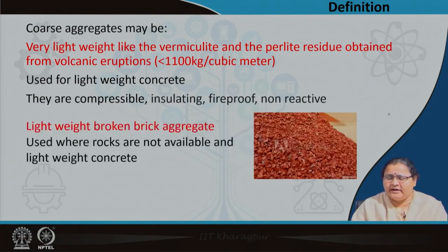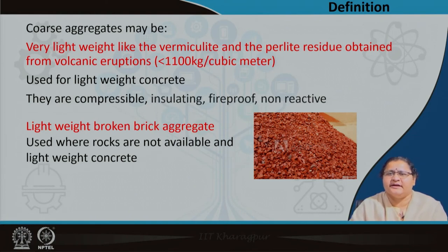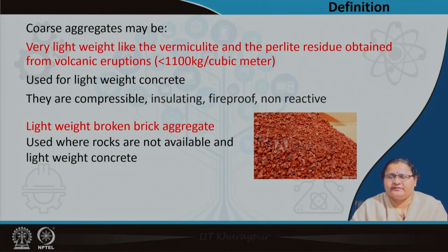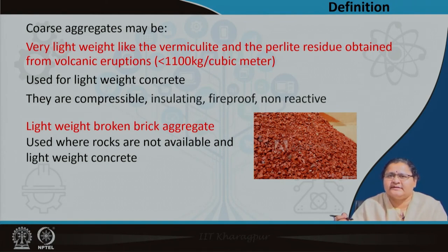Sometimes there is non-availability of stone. In our country context, say in Tripura, you may not get an abundance of stone. So either you cannot get coarse aggregate, or you have to transport it from a location which increases the cost, making the economy unachievable. There you can use lightweight broken brick aggregate as coarse aggregate in the mix. These are also used for road constructions. Fourth grade brick parts are also used for constructions and can be used as coarse aggregates in a concrete mix.